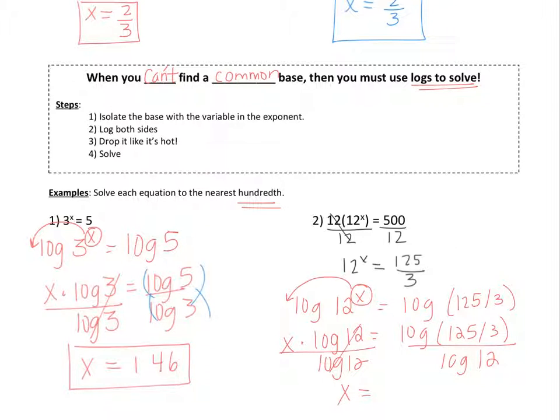Divide both sides by log 12 to get x by itself. Now pause the video, and please type in log of 125 over 3, divided by log of 12. Okay, so you should get approximately 1.50.